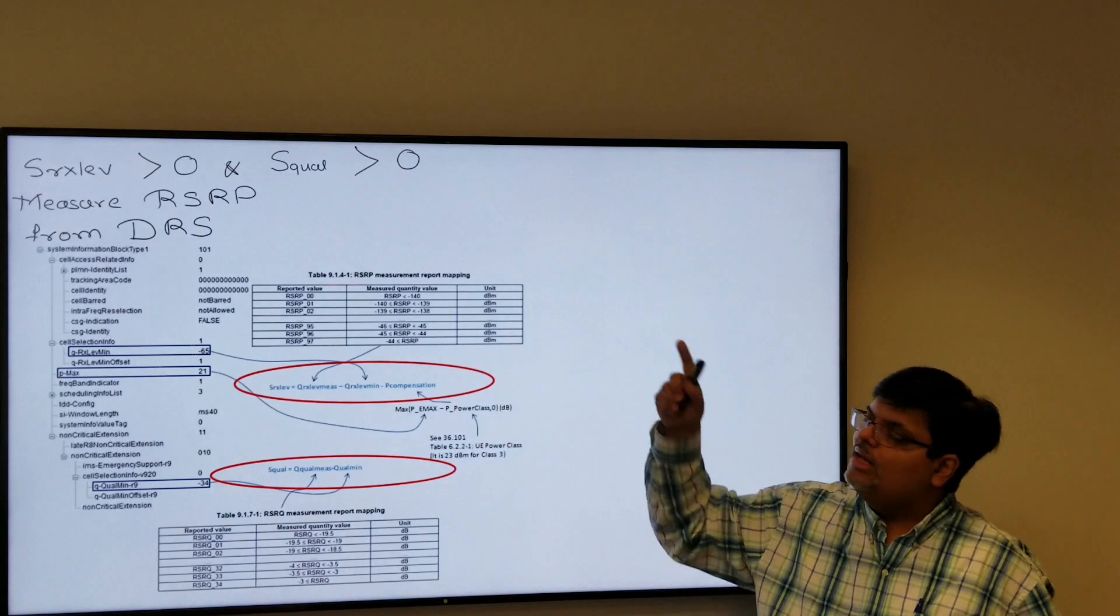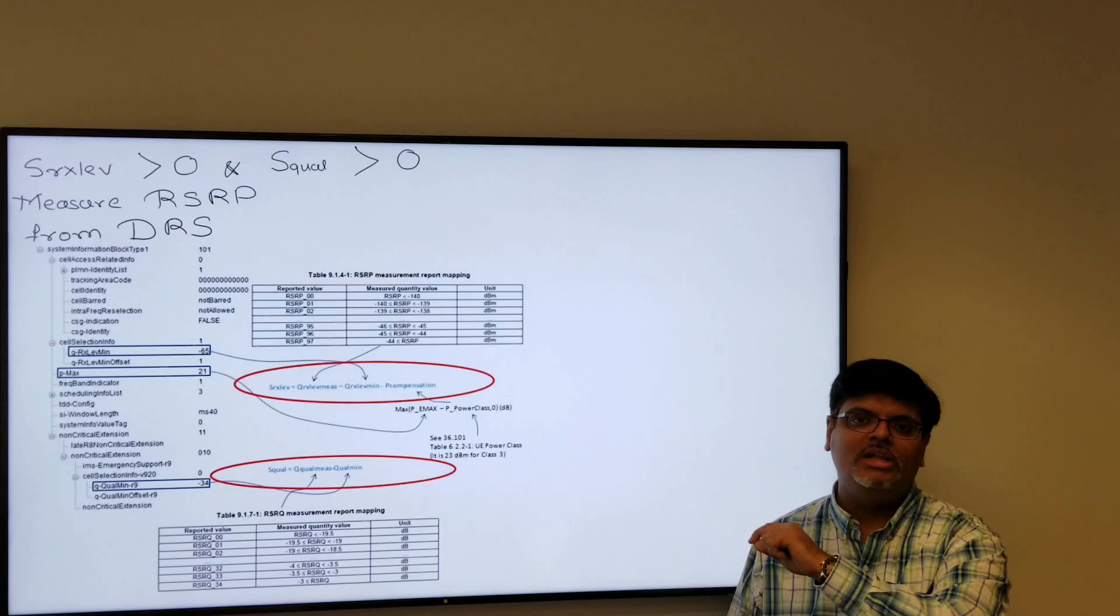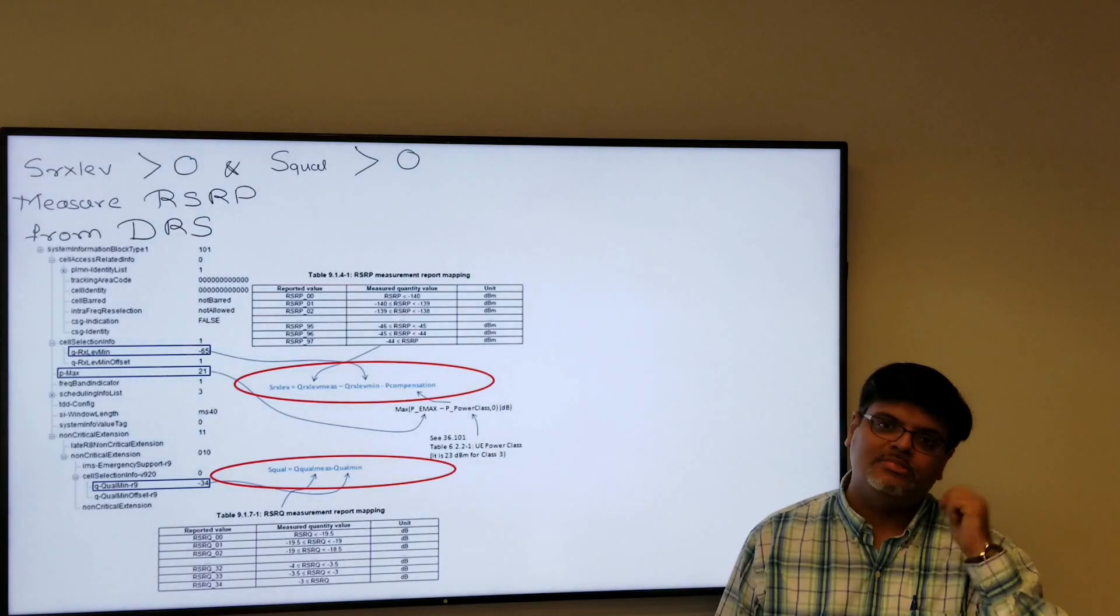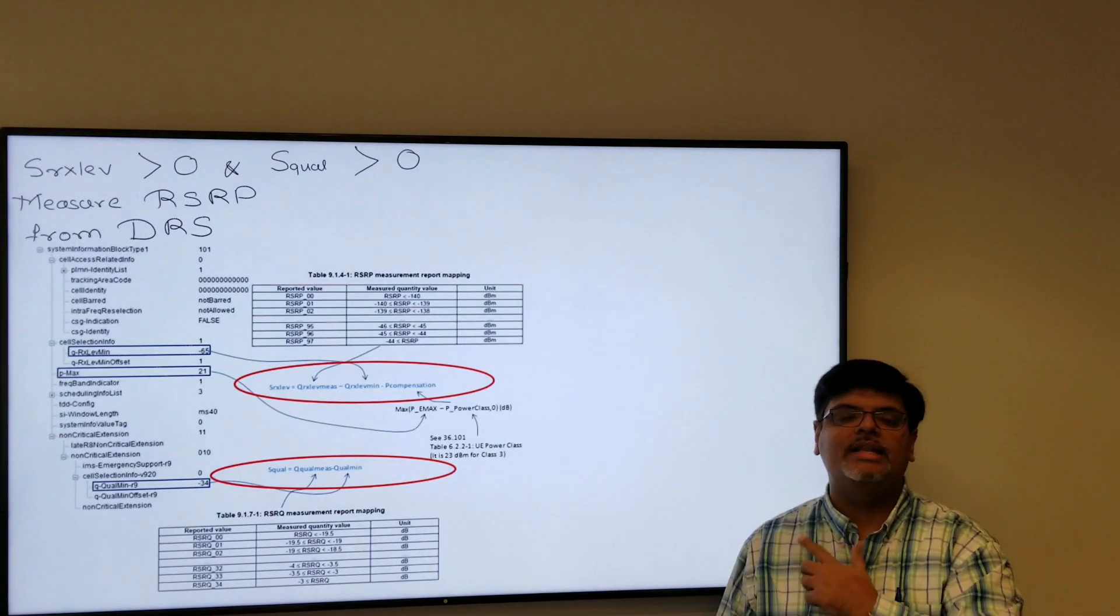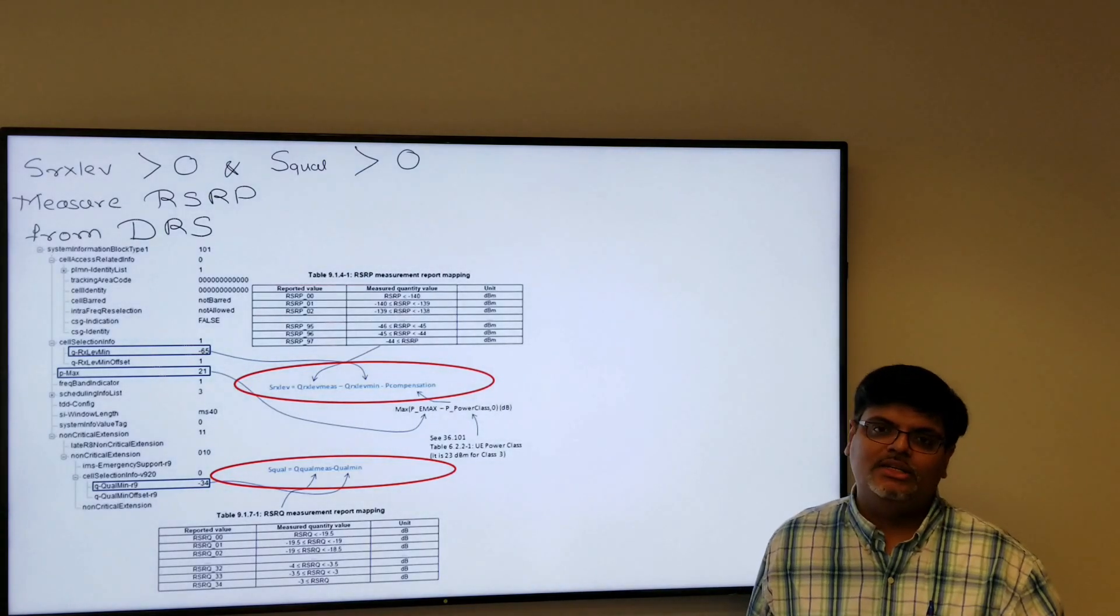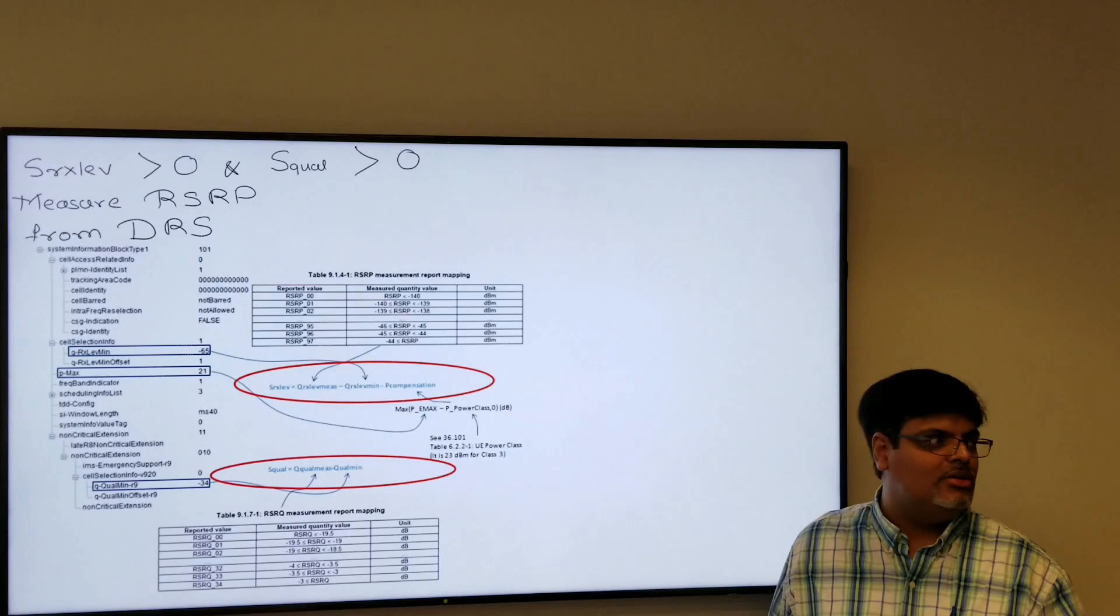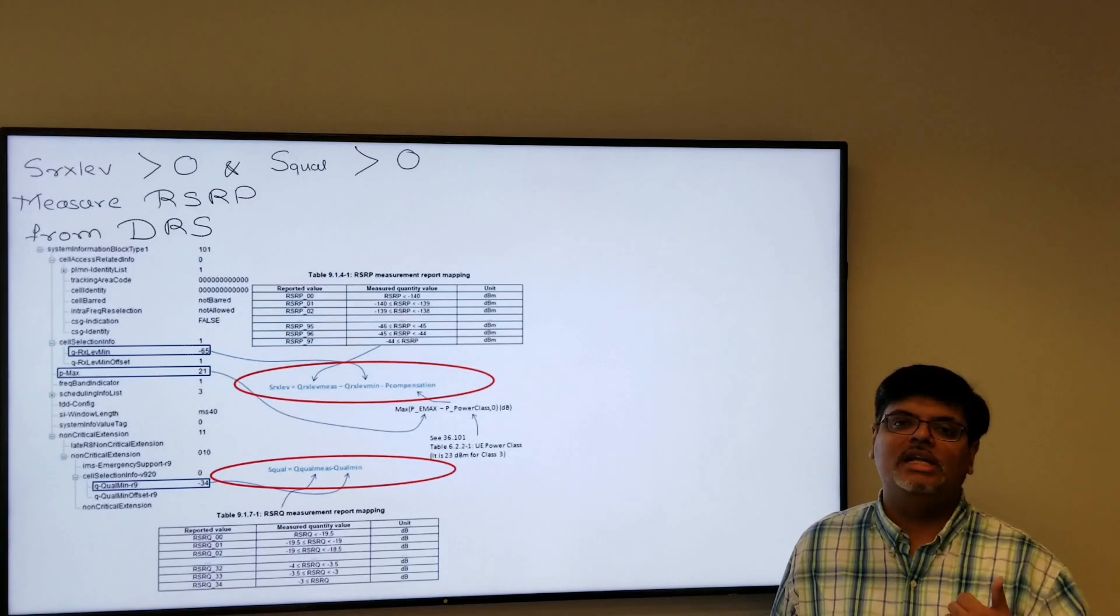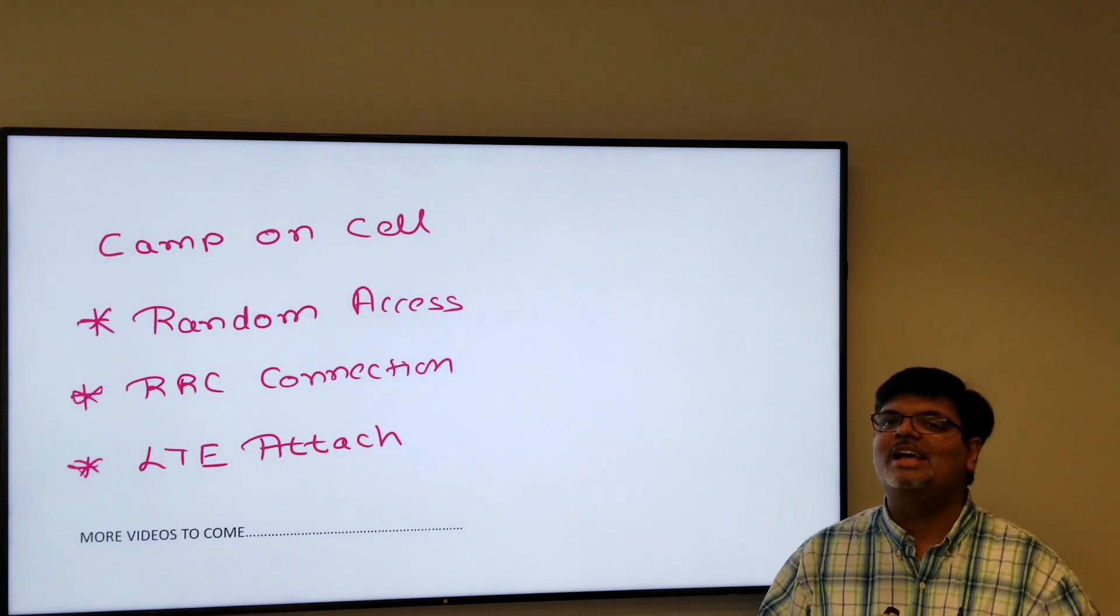The only parameter here which is not transmitted in SIB1 is RSRP which is measured by UE. So by putting that in this formula and computing it, it will see, okay, the S Rx receive level is basically greater than zero, S qual is greater than zero, this cell is strong enough, I can camp on. So basically it will go and camp on to the network. Here the cell has only camped on, here the UE has only camped on the cell, not yet attached.